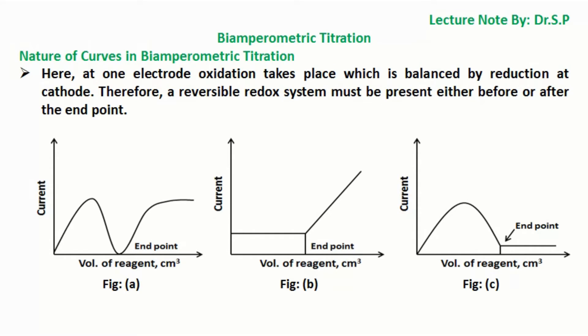Curve C represents a case which is reverse of case B. Here, reversibly behaving system is titrated against irreversible system. Thus, the current after end point remains zero. For example, titration between iodine solution and thiosulfate solution.